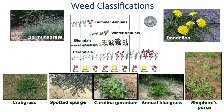Winter annuals germinate from late summer to early winter, but they may not grow very much until the temperature warms towards the end of winter. They flower and reproduce seed in mid to late spring and die in the early summer. Henbit, annual bluegrass, Carolina geranium, and chickweed are examples of winter annuals. Biennials are plants that usually require two growing seasons to complete their life cycle — shepherd's purse is an example. Perennials produce vegetative structures that allow them to live for three years or longer — some species live indefinitely. Examples include yellow nutsedge, oxalis, dandelion, and bermudagrass.